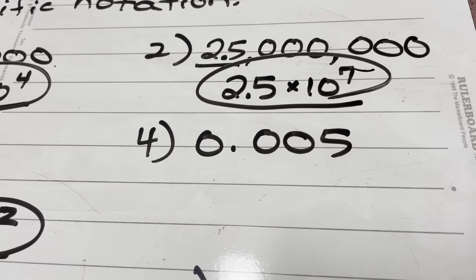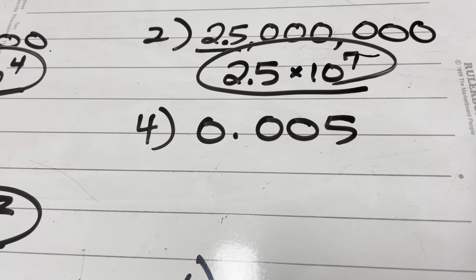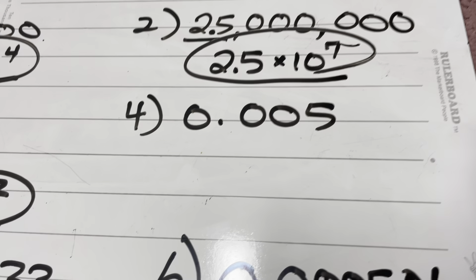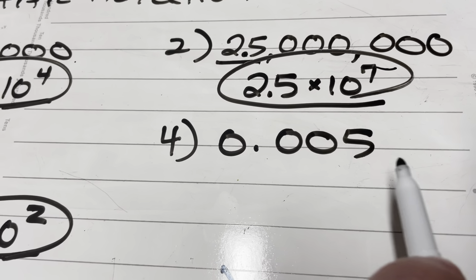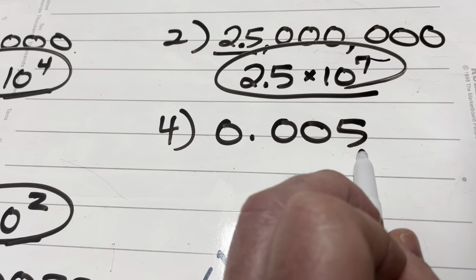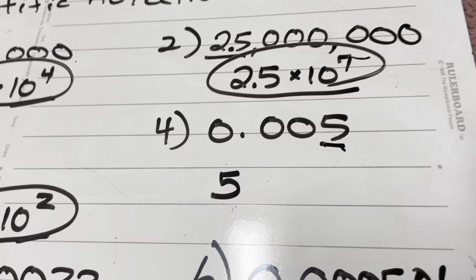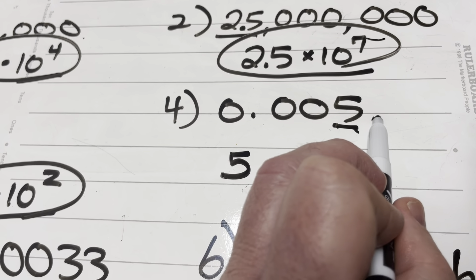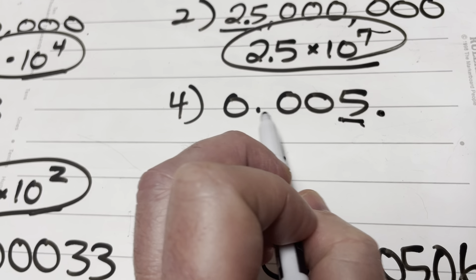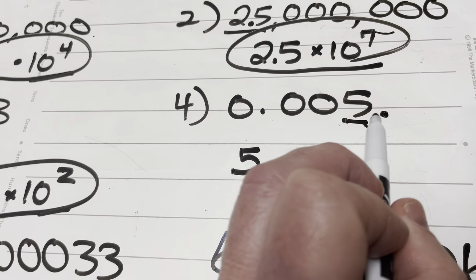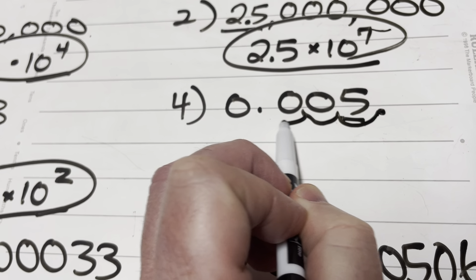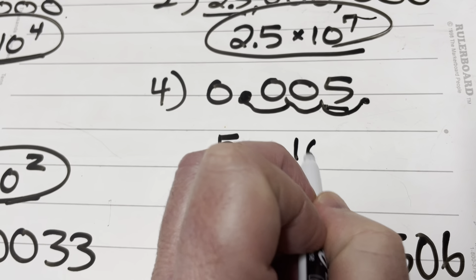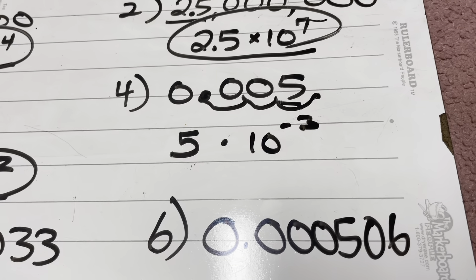Now we've got numbers that are less than 1, which means we're going to be doing a negative exponent. Once again, my number has to be at least 1 but less than 10. The only digit that's there is a 5, so I'm just going to go with 5. With 5, if the decimal's here and it's 5, how many places am I moving the decimal to get it to its original position? 1, 2, 3 — I'm moving it three places to the left. So it's times 10 to the power of negative 3.